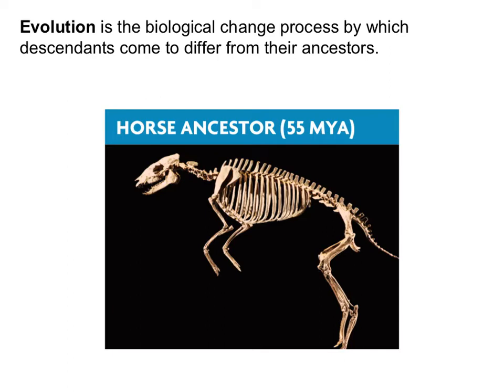This image right here is of a horse ancestor from 55 million years ago, which clearly looks different from the horses we have today. The face was smaller, the legs were smaller. That's actually because this horse lived in the forest and had to climb over little rocks and fit between trees, which is different from where modern horses would be found in the wild now.